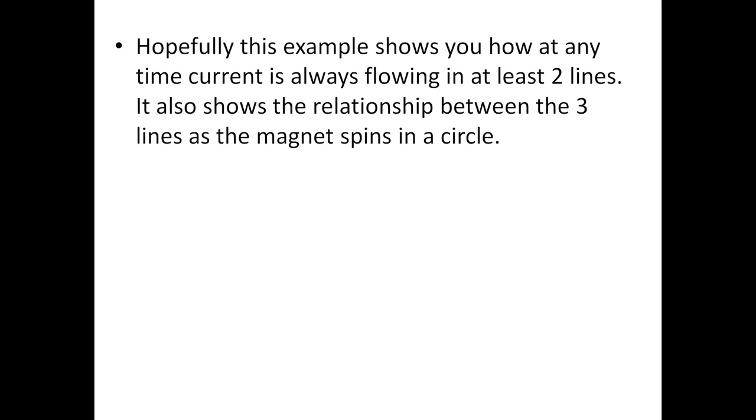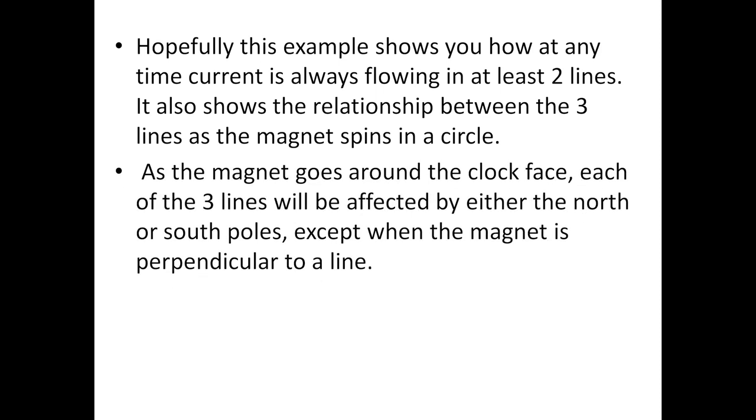Hopefully this example shows you how at any time current is always flowing in at least two lines. It also shows the relationship between the three lines as the magnet spins in a circle. As the magnet goes round the clock phase, each of the three lines will be affected by either the north or south poles, except when the magnet is perpendicular to a line.